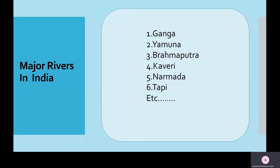Before we start with locating and labeling, let's take an introduction of the various major rivers flowing in India. India is blessed with many rivers. There are certain major rivers which bifurcate into their tributaries and have made a wide network throughout the nation, quenching the thirst of Indians and helping agriculture develop. Some examples are Ganga, Yamuna, Brahmaputra, Kaveri, Narmada, Tapi, and so on.